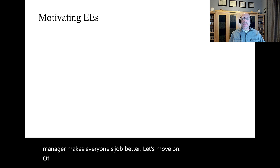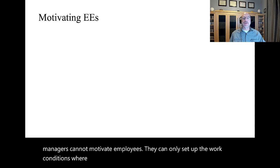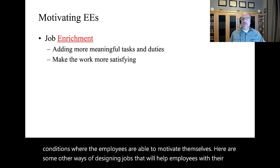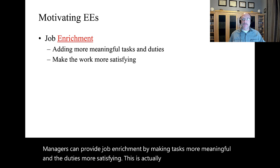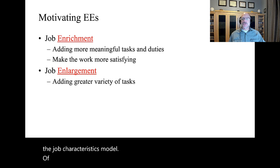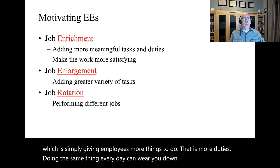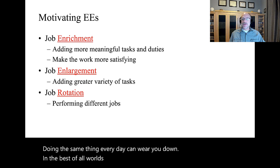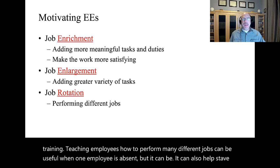Of course, there are other ways of motivating employees. Technically, managers cannot motivate employees. They can only set up the work conditions where the employees are able to motivate themselves. Here are some other ways of designing jobs that will help employees with their motivation. Managers can provide job enrichment by making tasks more meaningful and the duties more satisfying. This is actually one of the key aspects of the job characteristics model. Of course, another thing a manager can do is to provide job enlargement, which is simply giving employees more things to do, that is, more duties. Doing the same thing every day can wear you down. In the best of all worlds, managers can use job rotation by cross-functional training. Teaching employees how to perform many different jobs can be useful when one employee is absent, but it can also help stave off boredom and increase self-worth.